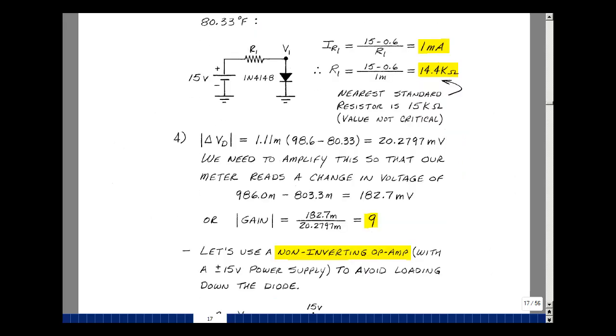As we change the temperature from 80.33 degrees to 98.6, what's the change in the voltage across the diode? Our temperature coefficient times this change in temperature, which is about 18.27 degrees Fahrenheit, gives 20.2797 millivolts. Our multimeter will be taking the difference of these two voltages, which is 182.7 millivolts. I need to increase this to be as large as the display values. In other words, I need an amplifier. I need 182.7 millivolts divided by 20.2797 millivolts, which is a gain of 9.